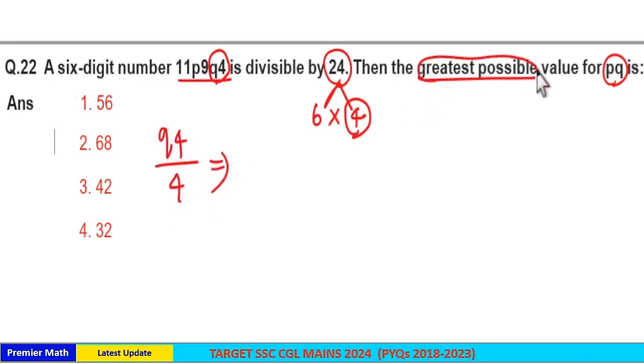And we need greatest possible value for PQ, which means give Q the maximum possible value here.